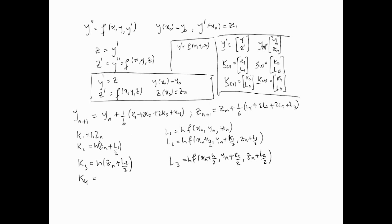Last one: k4 equals h times (zn plus L3), and L4 is h times f(xn plus h, yn plus k3, zn plus L3). That basically is the Runge-Kutta fourth order for this particular second order differential equation.